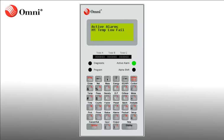It is important to note that the faults that cause the alarms are still present, but they have now been acknowledged by someone. Once the faults that cause the alarms to activate have been fixed, the Omni will remove the acknowledged alarms from the list automatically and the LED will turn off.